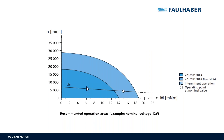Now we add the nominal voltage curve UL. This curve shows the operating points at nominal voltage. It starts here at 6700 rpm — that is the no-load speed. Any operating point above the curve requires a higher operating voltage, and any point below the curve requires less voltage.